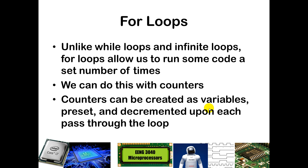For loops allow us to execute code a set number of times — you might want to run something 10 times, 3 times, or whatever. Typically, you have a counter variable initialized to a certain condition, either starting at 0 or 1, and you keep incrementing it until you reach a threshold, or you start at an initial value and keep decrementing until you reach 0. Then you escape from the loop. We can create a counter variable, preset it with a particular value, and decrement or increment it every time we pass through the loop, checking if it's reached 0 or some predefined limit.